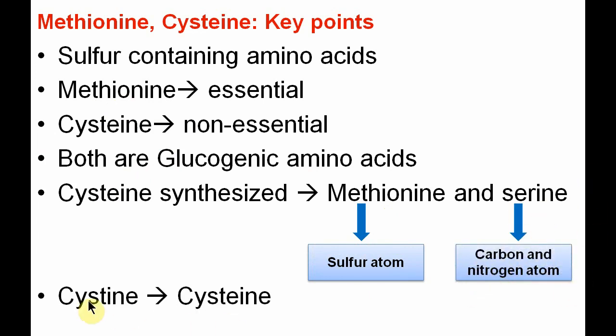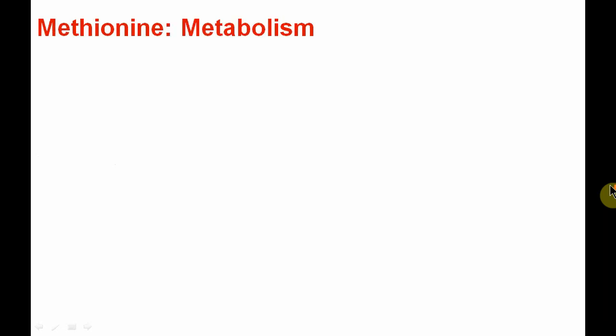Cystine is synthesized from cysteine upon oxidation. So methionine, cysteine, and cystine — all three are considered sulfur-containing amino acids. Now let us discuss methionine metabolism.